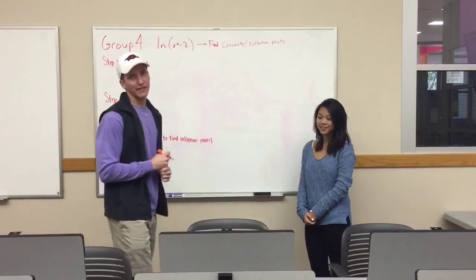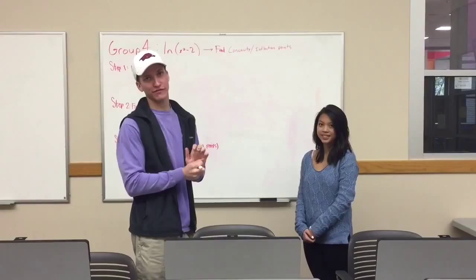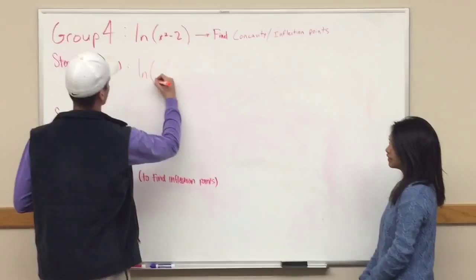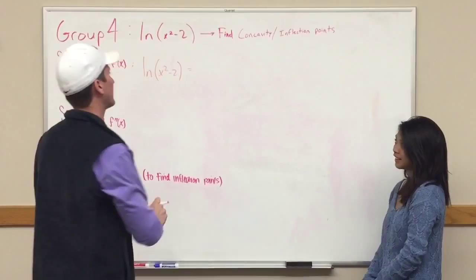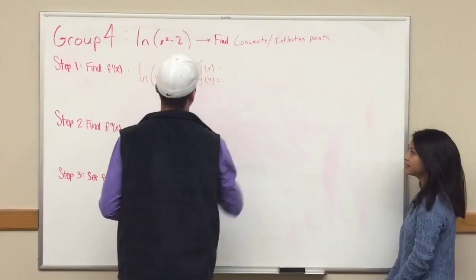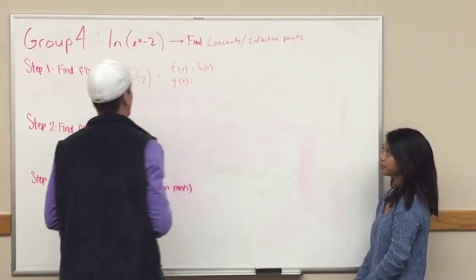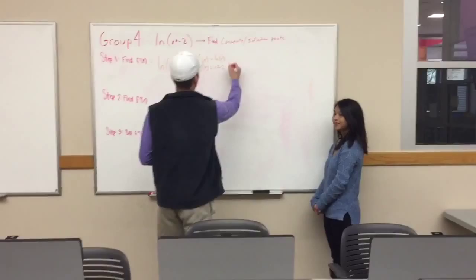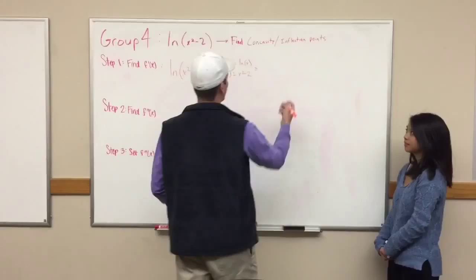We're going to have to find the first derivative, second derivative, and set the second derivative equal to zero. To find the first derivative, we start with ln(x² - 2). In order to find the first derivative of this, we're going to have to use the chain rule, which means we need to find an f(x) and a g(x) — an inside and an outside function. The outside function is simply ln(x), and the inside function is x² - 2.